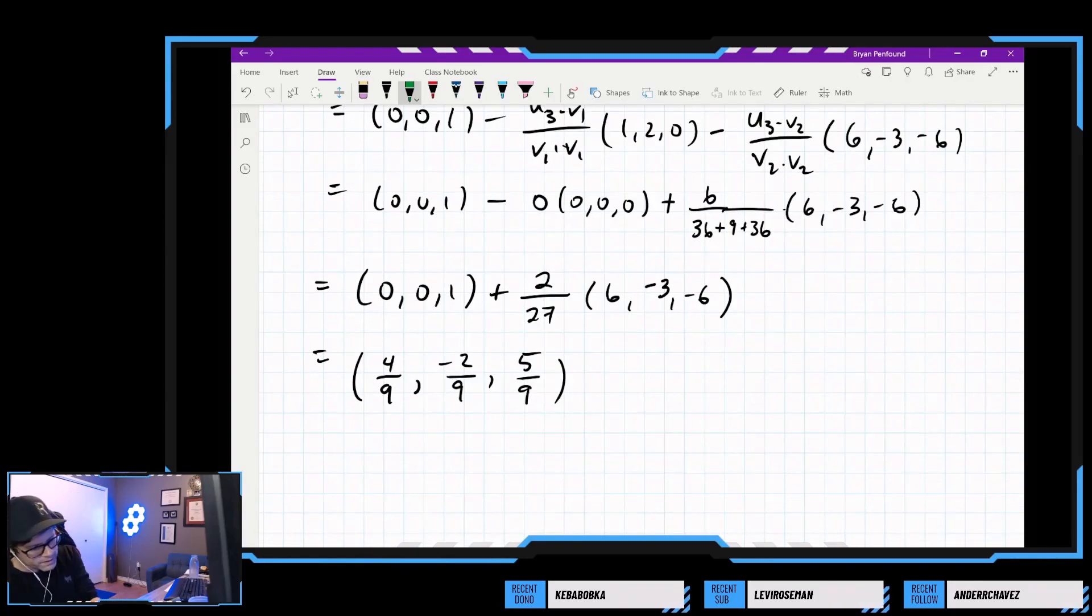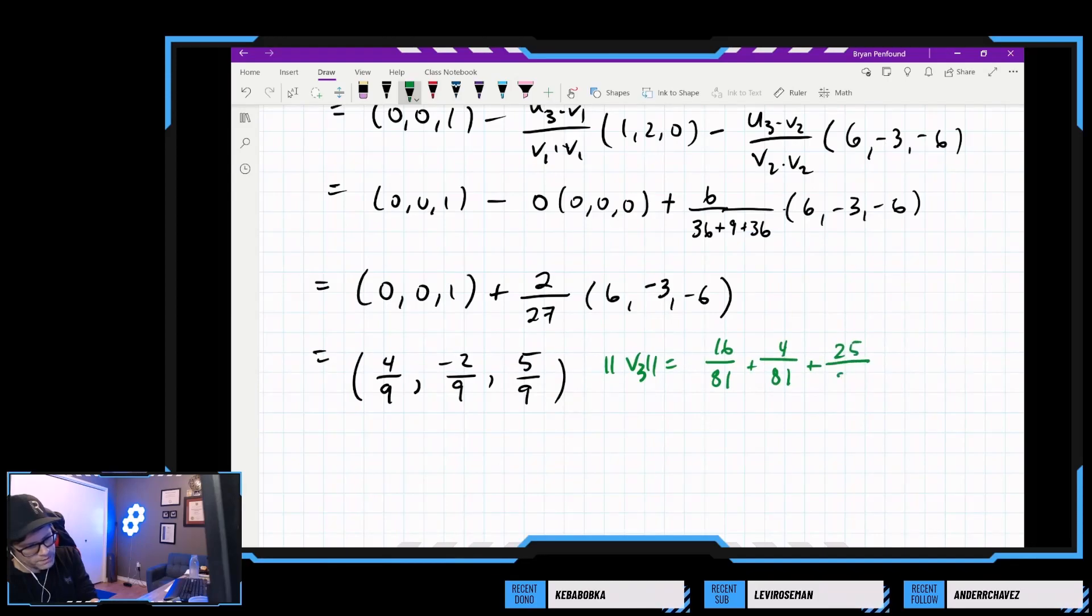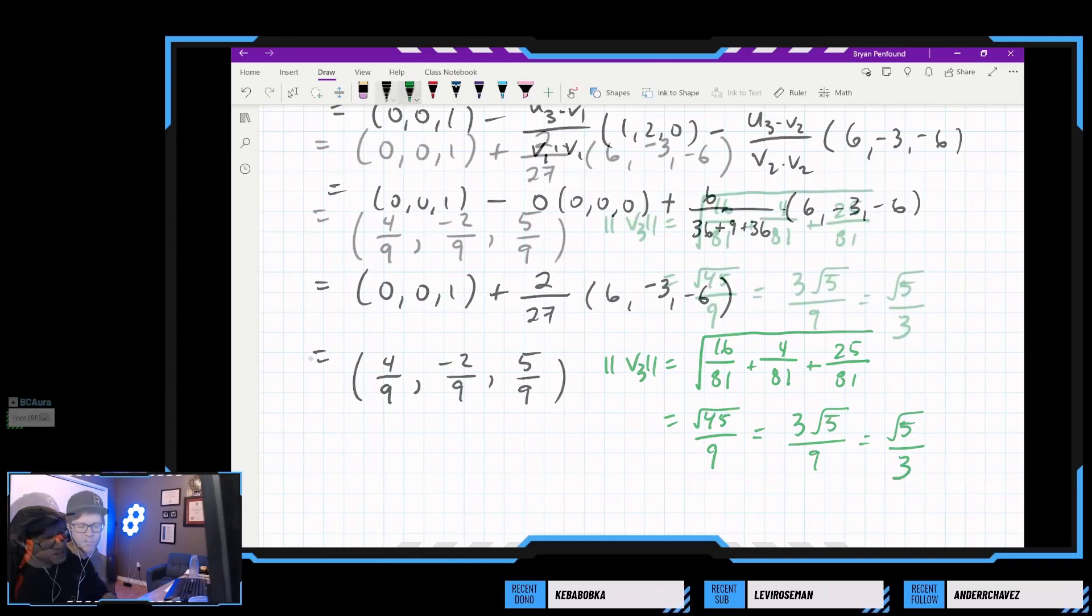And then for our last vector, for v3, we get 16, 4, and 25. Please tell me that comes out to be something super nice. 20, 45? Root 45? Oh we can pull a 3 out of that, can't we? So we can divide that by 9. So we could write this as root 5 over 3. So we have a set of orthonormal vectors.